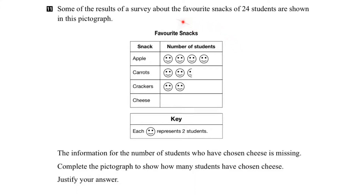In this question we're given a pictograph that shows the favorite snacks of students and a visual representation of the number of students that picked those snacks as their favorite. What we see is that the number of students that picked cheese as their favorite is missing, so we have to figure that out and fill in the missing information.